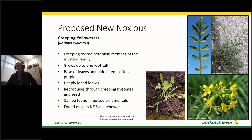Another proposed new noxious weed is creeping yellowcress, a perennial member of the mustard family with creeping roots. It reproduces by rhizomes and by seed, doesn't get very big — only about a foot tall — and has very deeply lobed or parted leaves. It's often introduced through potted perennials, such as fruit trees. There have been reports of this in the northeast part of the province in Saskatchewan.